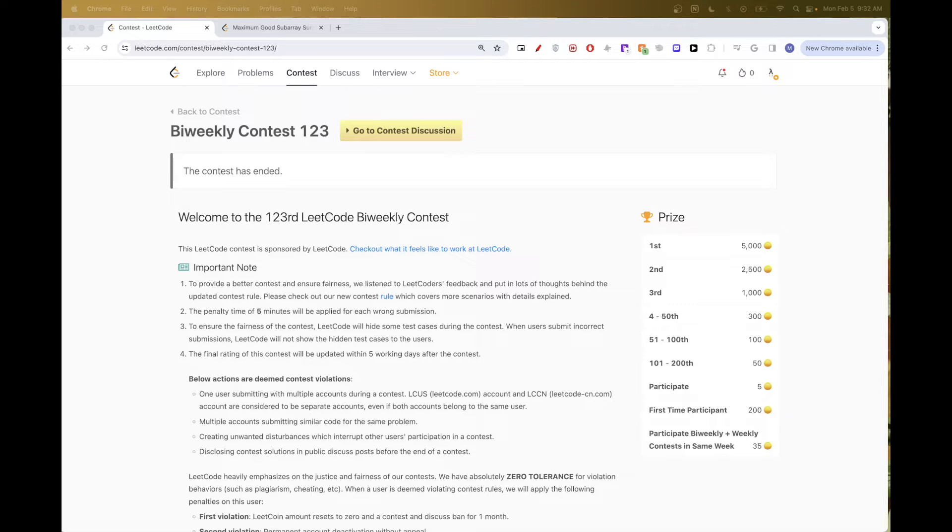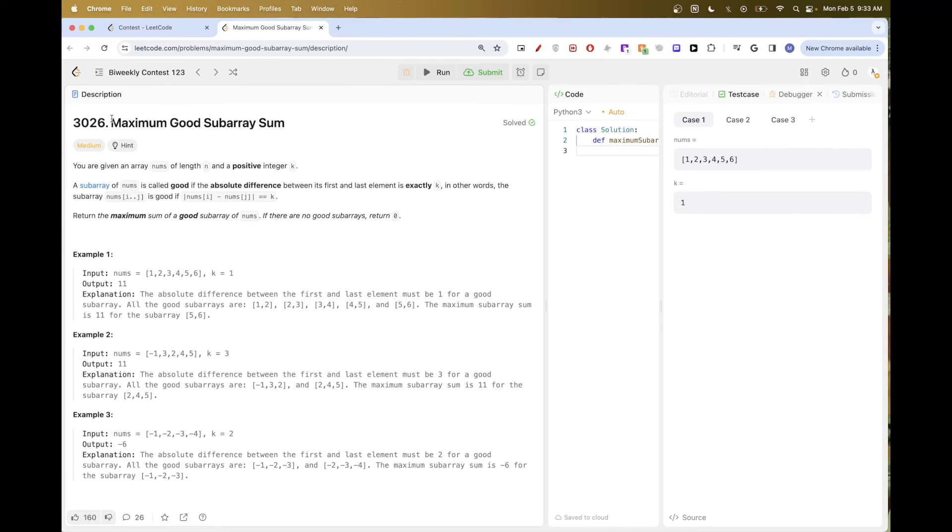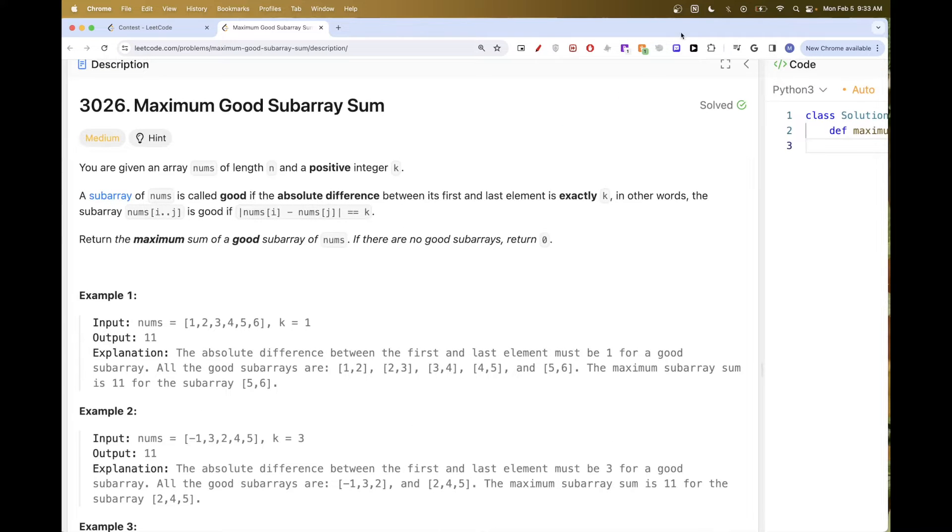Hello, so continuing on problems from bi-weekly contest 123, this week's bi-weekly. The third problem is maximum good subarray sum. So basically this problem, we have an array and we have a value integer k.